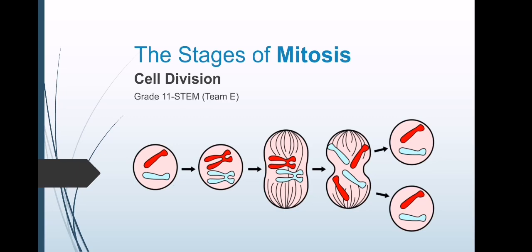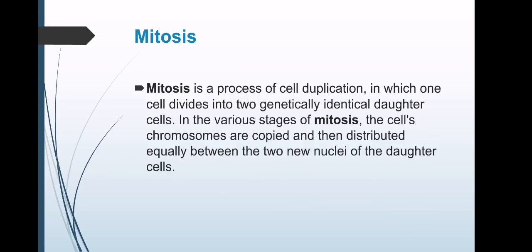The stages of mitosis. Team E. Mitosis is a process of cell duplication in which one cell divides into two genetically identical daughter cells. In the various stages of mitosis, the cell's chromosomes are copied and then distributed equally between the two new nuclei of the daughter cells.